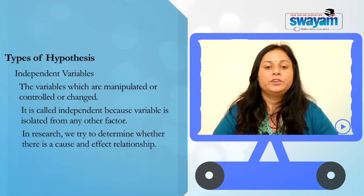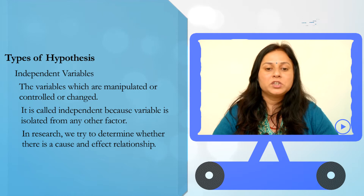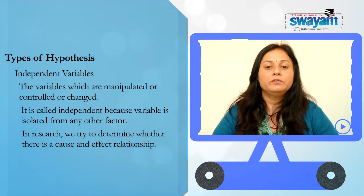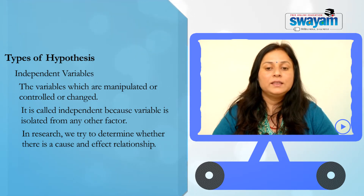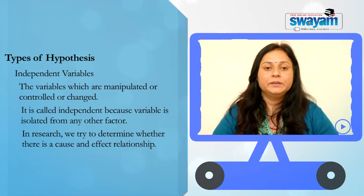In research, we try to determine whether there is a cause and effect relationship. When you are looking for some kind of relationship between variables, you are trying to see if the independent variable causes some kind of change in the other variable, or dependent variable.